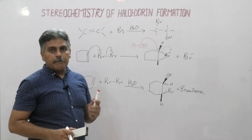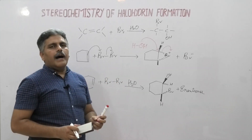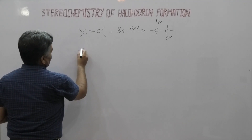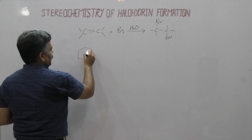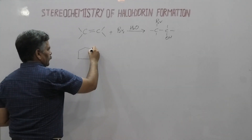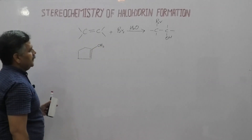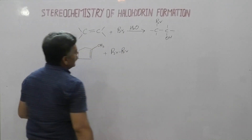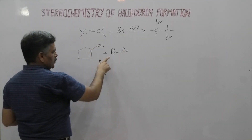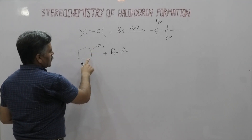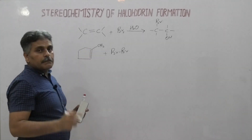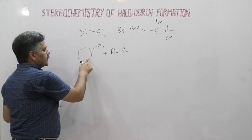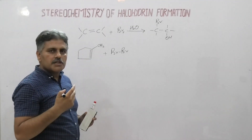Now I will discuss an example of halohydrin formation in which I can explain both orientation and stereochemistry of this reaction. Suppose we have a substituted cyclopentene — we have a methyl group here, so it is methylcyclohexene. When this methylcyclohexene reacts with bromine, the first step is the formation of the bromonium ion. The question is whether this bromine attaches to this carbon or that carbon. We know that one carbon is less substituted and one carbon is more substituted. I have already explained that bromine during the formation of the bromonium ion attaches at the less substituted carbon because it results in the formation of a more stable carbocation.